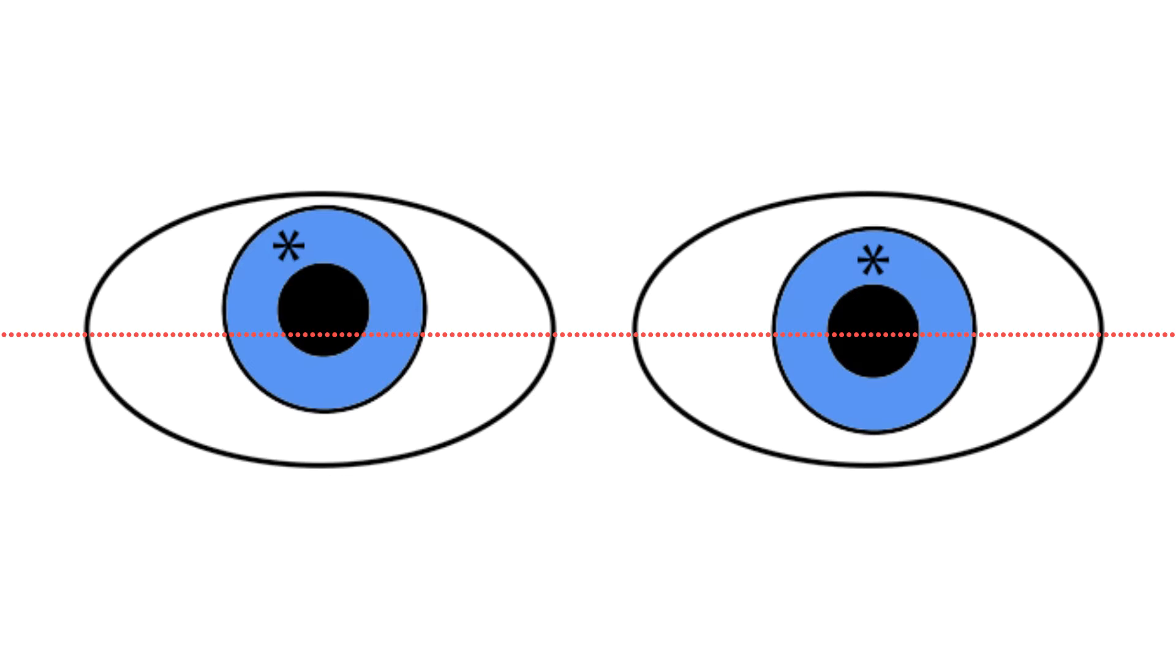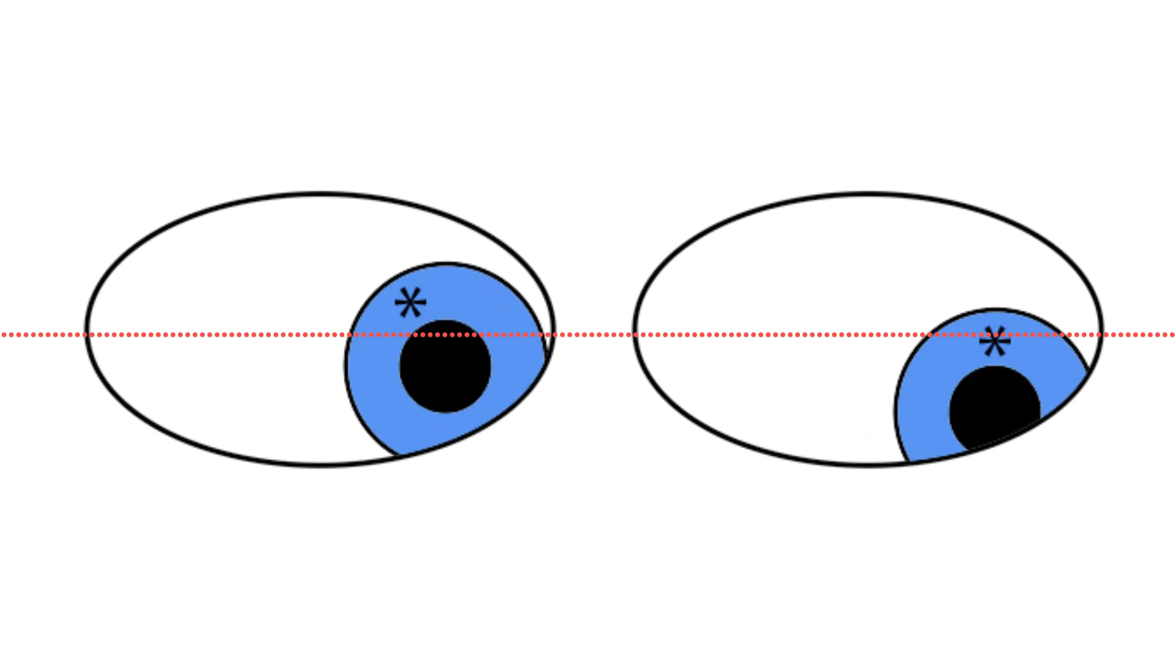There is one more feature typical of an acquired fourth nerve palsy. It displays greater misalignment in down gaze than in up gaze. Take a look at this patient with an acquired fourth nerve palsy.